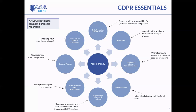By law, you must maintain a register of processing activities, whether you're a controller or a processor. This register documents what data you're processing, and the concept is that if the Information Commissioner wanted to know, you must hand it over. The ICO provides a template on their website. You should also carry out legitimate interest assessments as documentary evidence when relying on legitimate interest as a lawful basis.